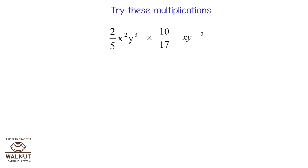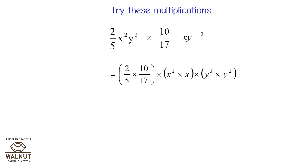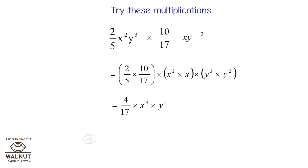2 upon 5 x squared y cubed into 10 upon 17 xy squared is equal to 2 upon 5 into 10 upon 17 into x squared into x into y cubed into y squared, which is equal to 4 upon 17 into x cubed into y raised to 5, which is equal to 4 upon 17 x cubed y raised to 5.